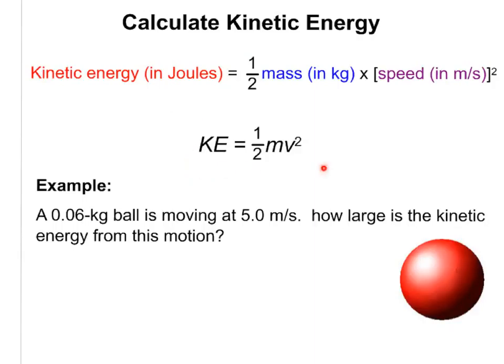Here is the formula for calculating kinetic energy: KE stands for kinetic energy, M for mass, and V for the velocity of the object squared.